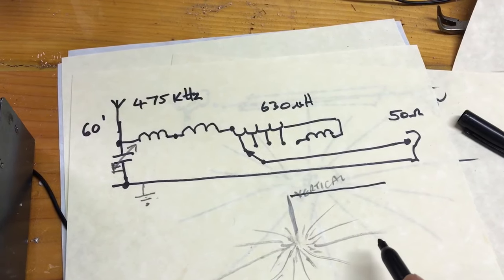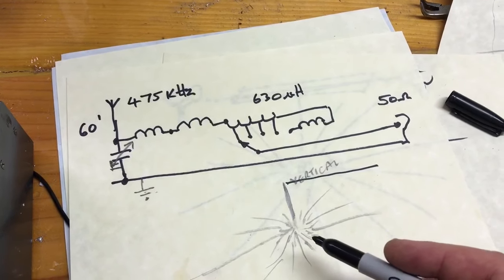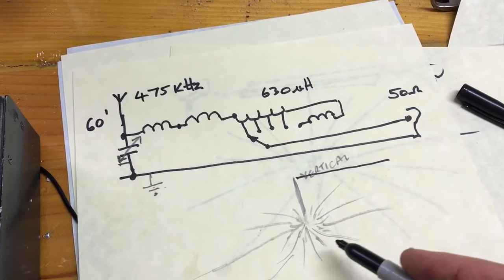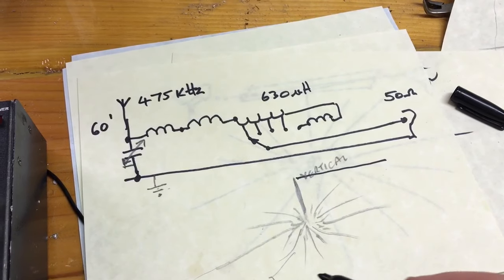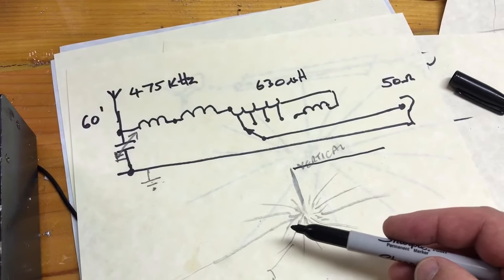The radial length should go out as far as the length of the top section. But again, the more earth radials you have underneath, even if they're short at the base of the vertical, that's what really makes a difference.